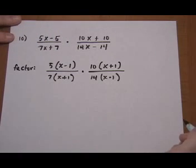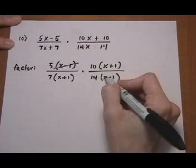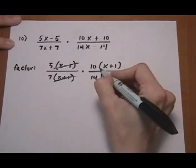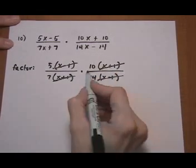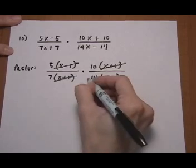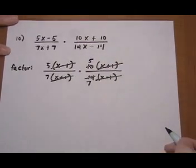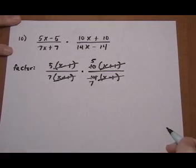Now that we've factored we can look and see what's in common. X minus 1 top and bottom. X plus 1 top and bottom. And then 14 and 10 both divide by 2. So divide by 2 is 7, divide by 2 is 5. And that looks like it.